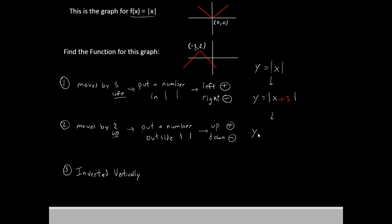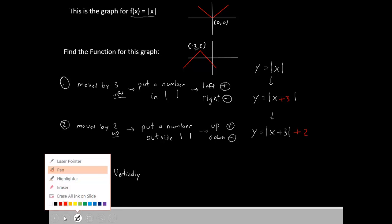So our new function is y equals absolute value of x plus 3 still inside the pipes, and now we're going to put on a plus 2 outside, but we're still not quite finished.